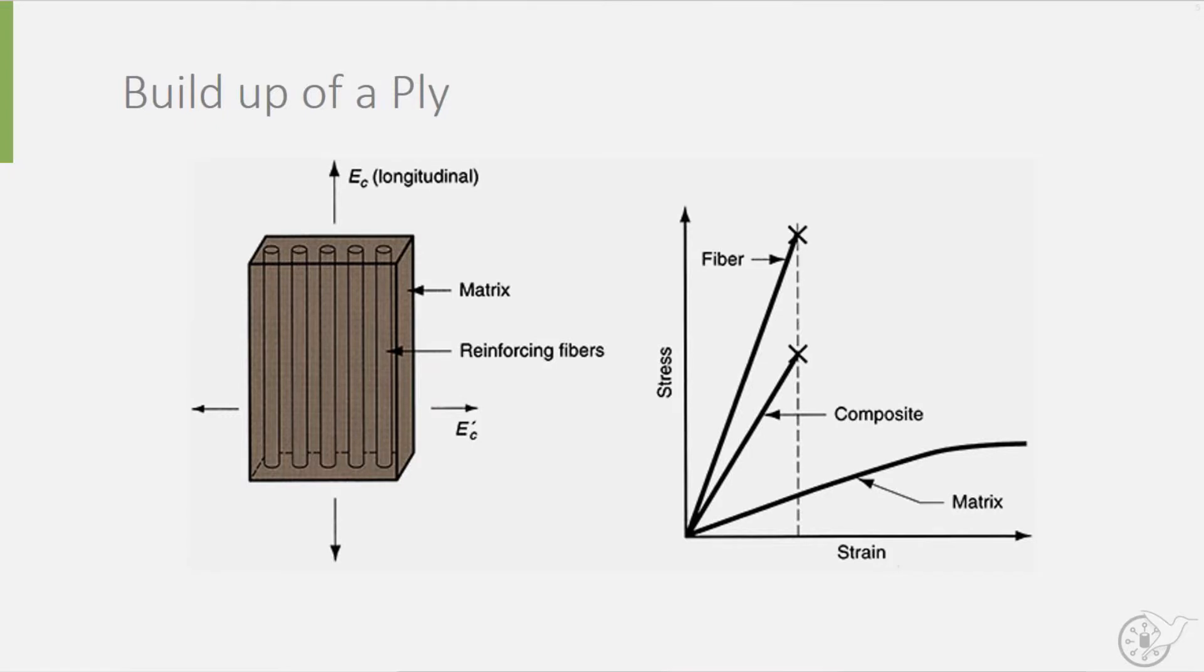The resin is often referred to as the matrix. This combination of a matrix and a sheet of woven fibers to form a material is shown here schematically, and is also known as a ply. With fibers predominantly in the 0 degree direction, it is now also easy to understand that the modulus of elasticity in longitudinal direction, EC, is much larger than the modulus of elasticity in transverse direction, E prime C.